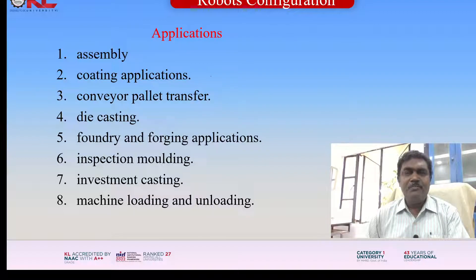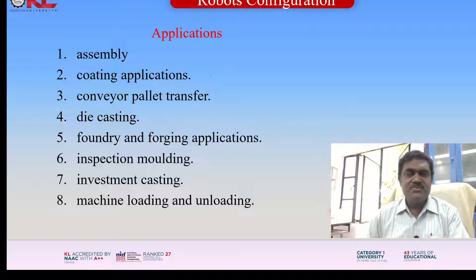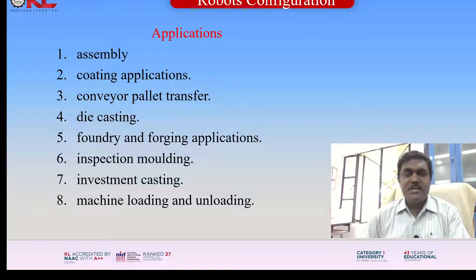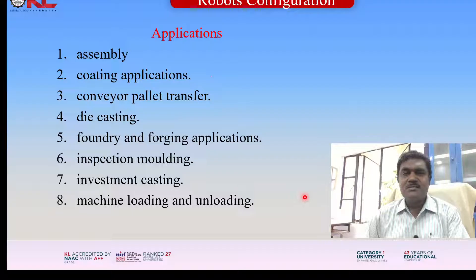What are the different applications of this robot? The cylindrical configuration is used in assembly operations and coating applications, conveyor pallet transfer, die casting, foundry and forging applications, inspecting, molding, investment casting, and machine loading and unloading. These are the applications of this cylindrical configuration.